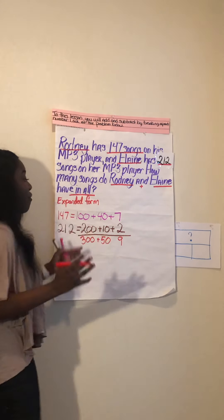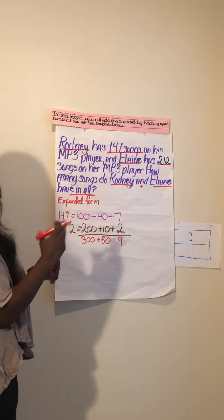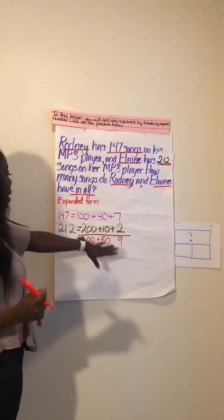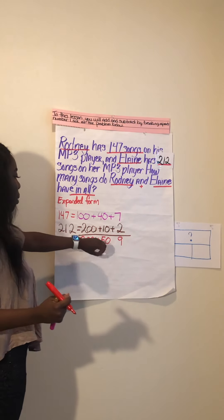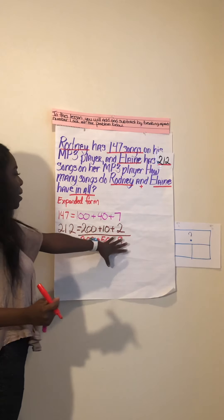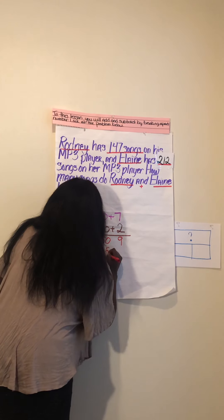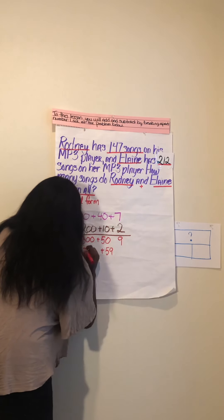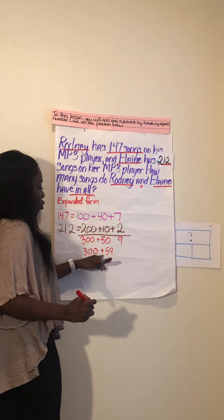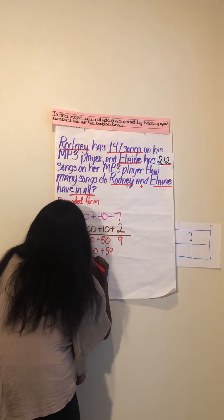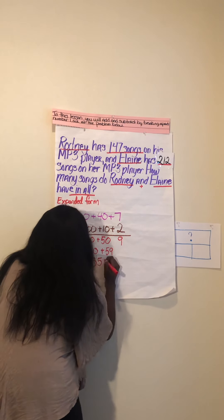Now we have to put these numbers together and we're going to do so by adding them together. So we're going to say what's 50 plus 9? 59. 300 plus 59. Now what's 300 plus 59? 359.